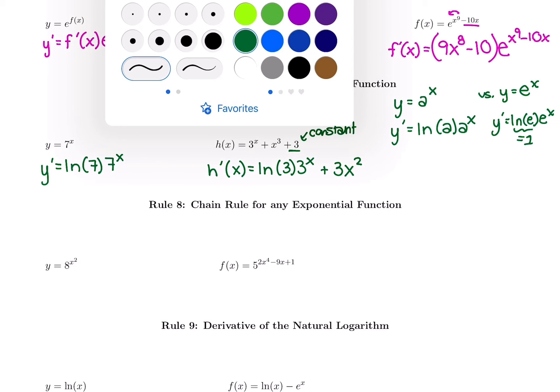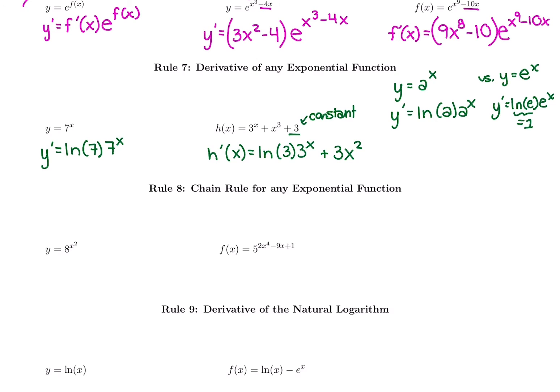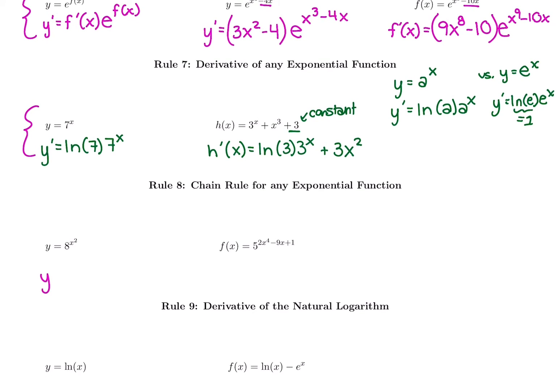The next rule combines the chain rule with the non-base-e exponential rule. For 8^(x²): we have something more than just x in the power, so the first step is taking the derivative of that power — derivative of x² is 2x. Then it looks like the other rule: ln of your base, times your base to the original power. So the derivative of 8^(x²) is 2x times ln(8) times 8^(x²), copying down the original function.